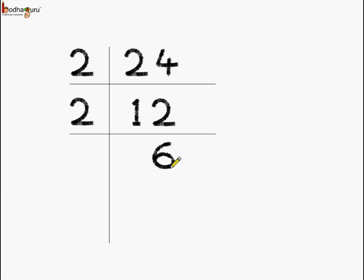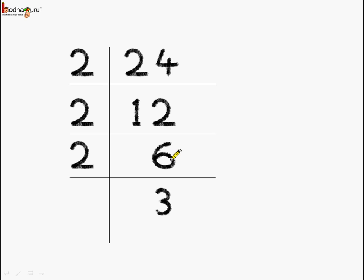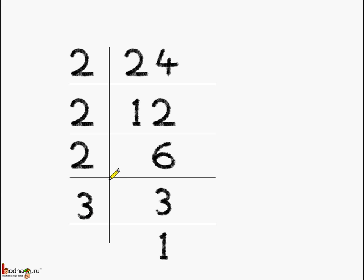Now let us again divide the quotient until we get the smallest prime number. 6 is again an even number and we can divide it by 2, which is the smallest even prime number. So, 2 threes are 6, and we have the quotient as 3. 3 is a prime number which is odd and it is divisible by itself — 3 ones are 3. Now we have found all the prime factors of 24 and the quotient remaining is 1.